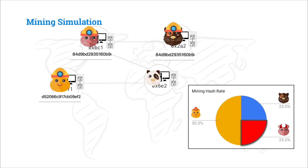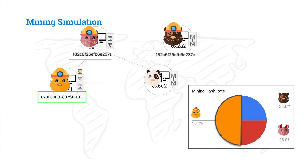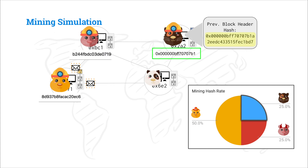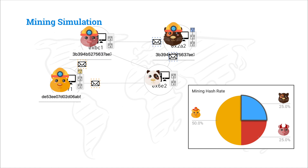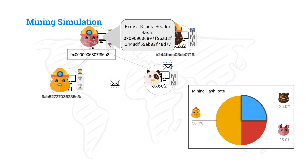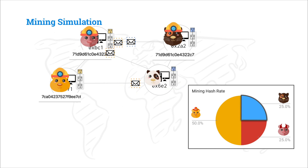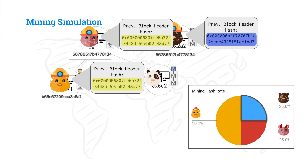Let's run through a situation that might occur. Everyone is trying to solve the proof of work for the third block, and Alice gets lucky and finds a valid block hash. She adds the third block to her chain, starts mining on top of it, and propagates it to the network. But Bob happens to find a valid block hash for his own third block at the very same time, adds it to his blockchain, and tries to propagate his block too. Mallory receives Alice's block first, verifies it, and starts mining on top of Alice's block. Jing receives Bob's block first, verifies it, and adds it to her blockchain. Now Alice and Mallory have a different history than Bob and Jing.